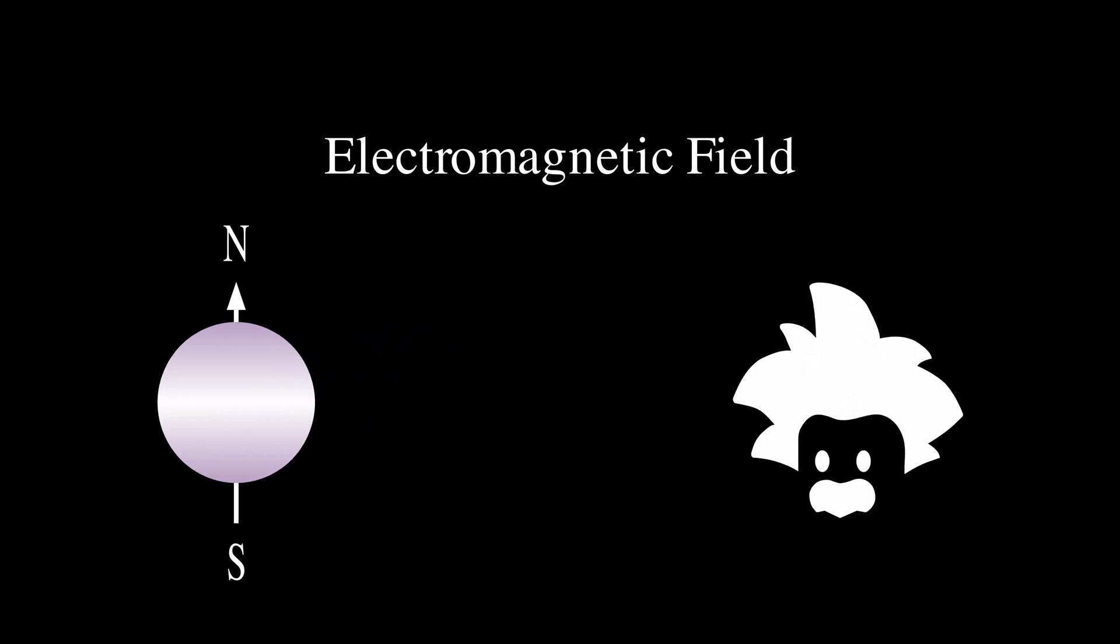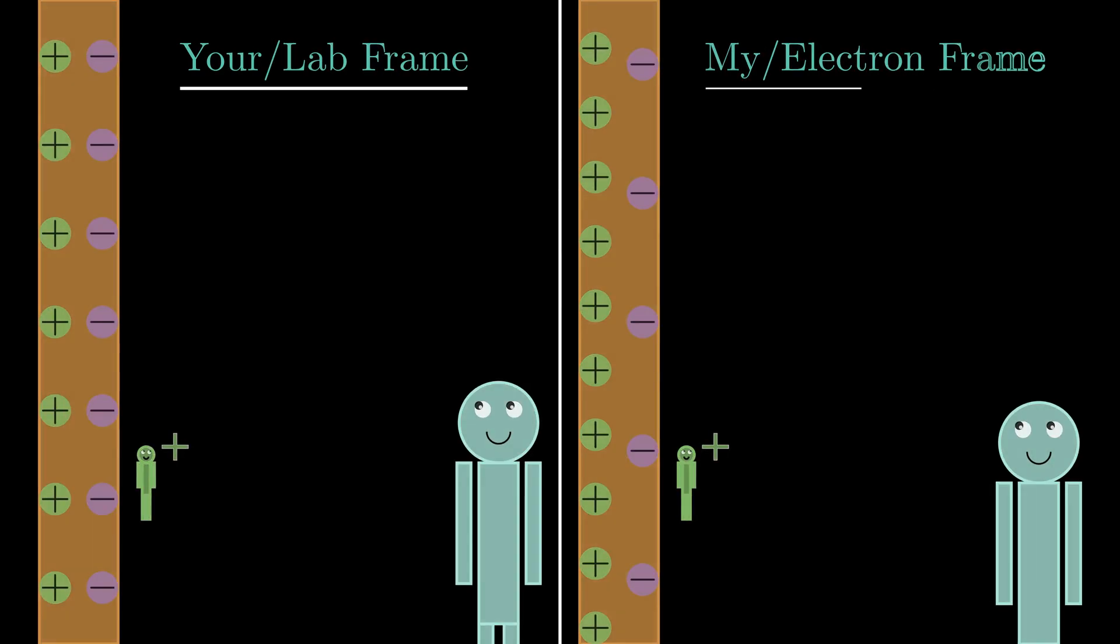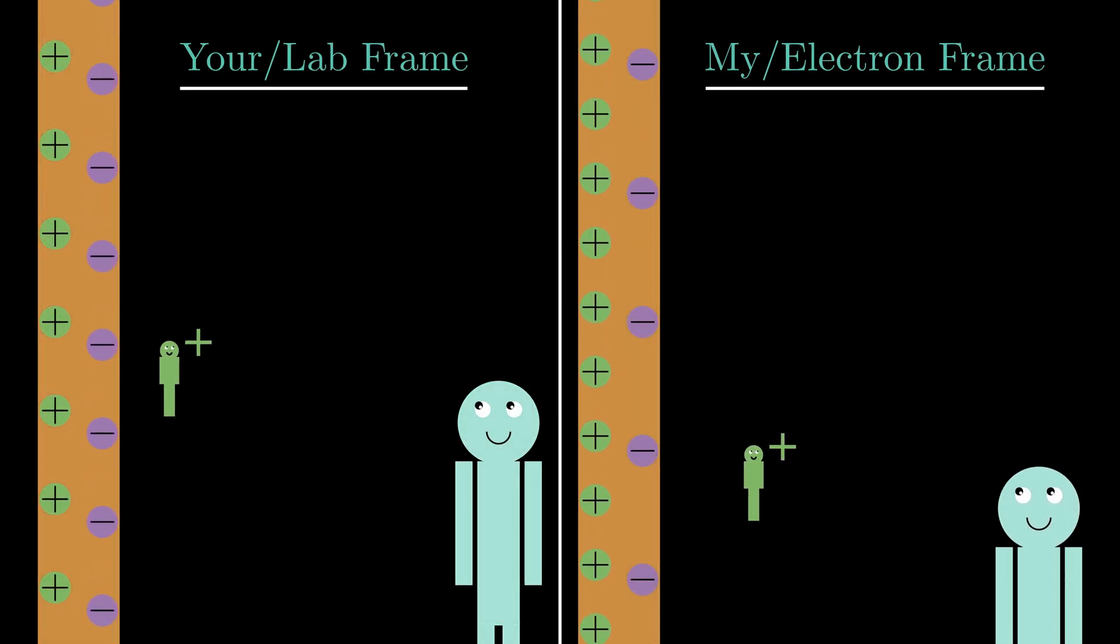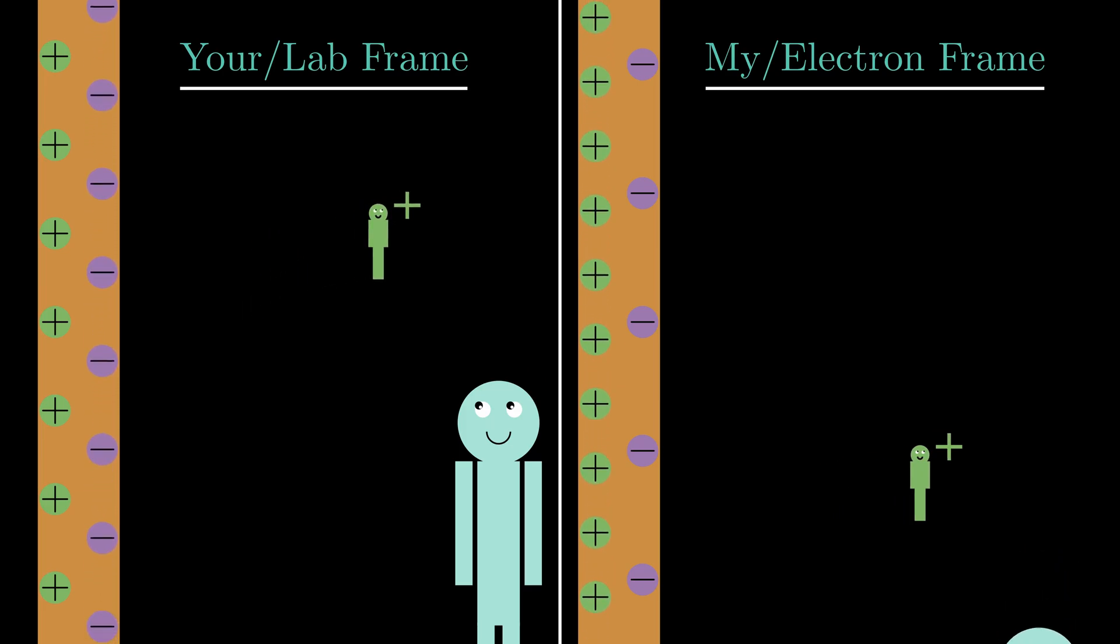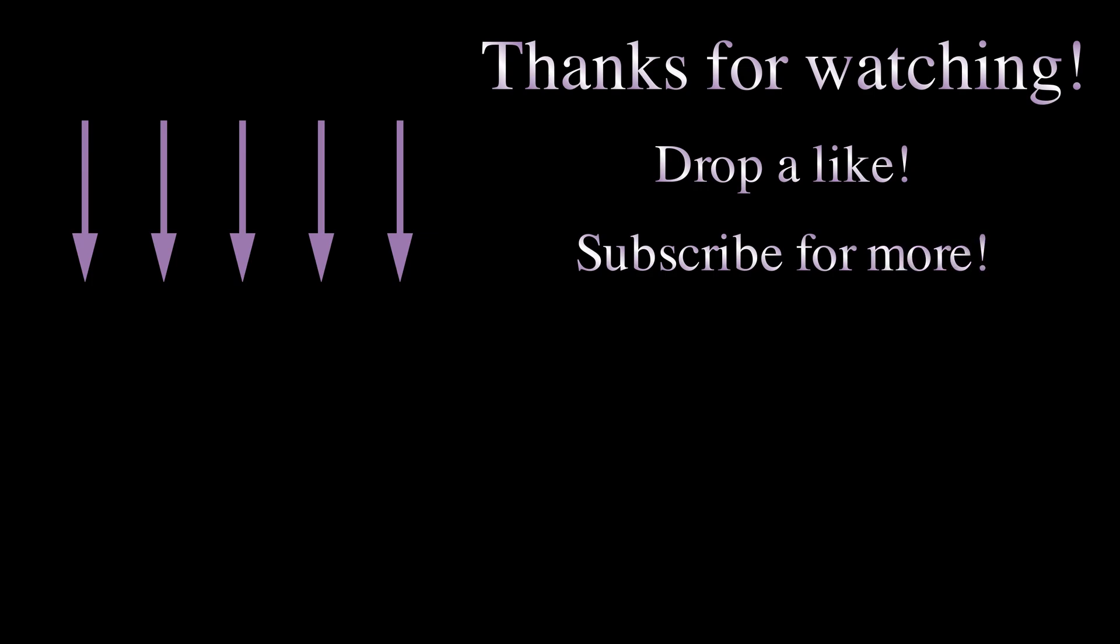Einstein's relativity showed us how electric and magnetic fields transform into each other with motion. So, in a way, all magnets, including permanent ones, are ultimately caused by charges having momentum at the atomic level. But how exactly do electromagnets work? Einstein's relativity has a really amazing explanation. Click on this video here to understand it. Thanks for watching.